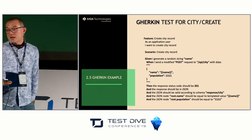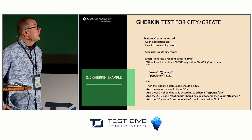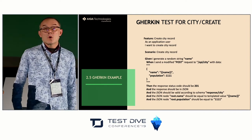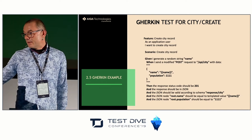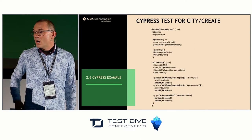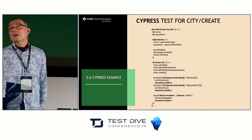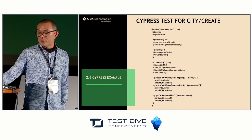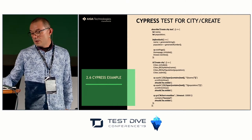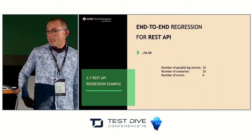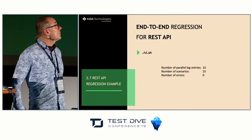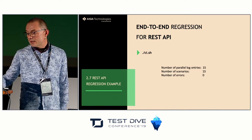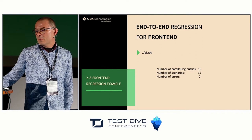The example test written in Gherkin sends appropriate requests to the API and verifies the answers, while tests in Cypress use HTML forms to send data and verify the contents of the user interface. For running the regression, we use the same set of shell scripts in both cases.